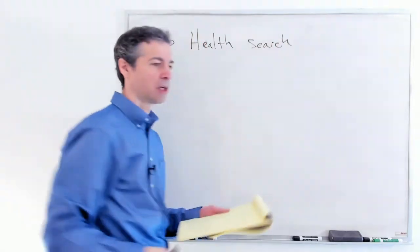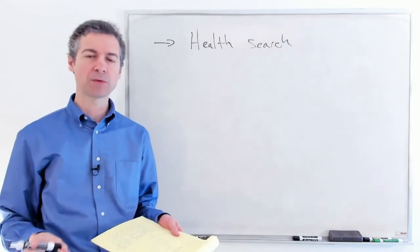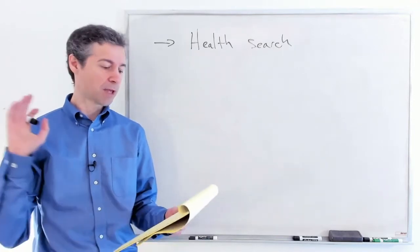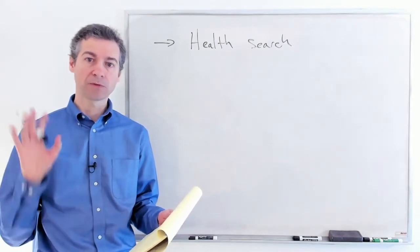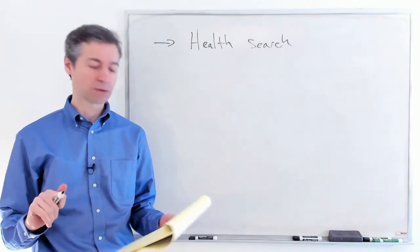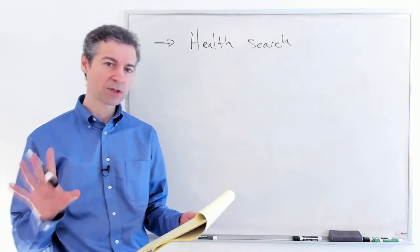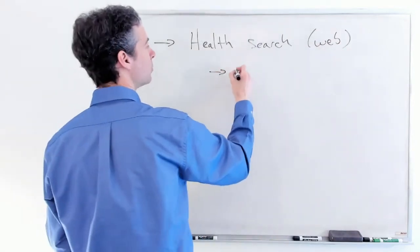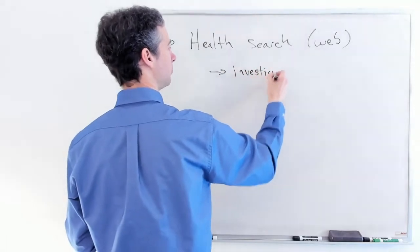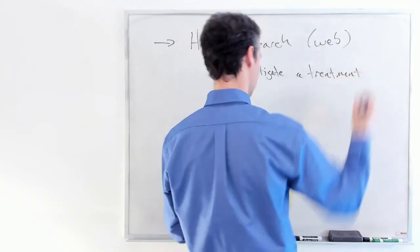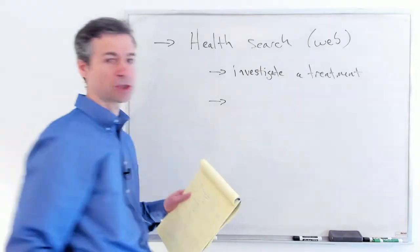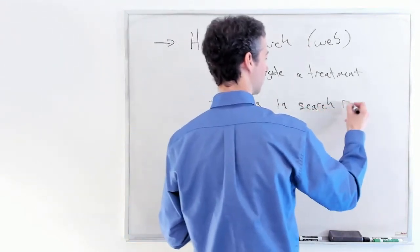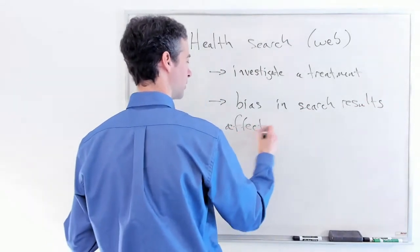This is a project that originated with a former management engineering student, Francis Pokekar, and a graduate student Amira Ganai. Francis is now working on her master's at the University of Toronto. The issue was this: in health search on a web search engine like Google, if you want to investigate a treatment for a particular health issue, we were able to show in this study that bias in the search results affects people's decision accuracy.